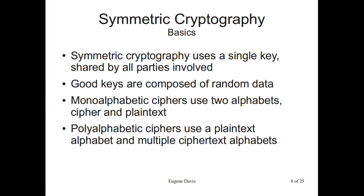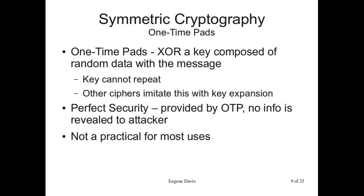Symmetric cryptography uses a single key. Every party that needs to decrypt or encrypt anything has to use that key. A good key is composed of random data — the more random it is, the better. Usually what you do is use a key expander, which basically takes random data and plugs it into a pseudorandom number generator. One-time pads are the only encryption algorithm which can provide perfect security, meaning you cannot break it and cannot gain any information about the content of the message just by looking at the encrypted message. Of course, it's entirely impractical for most uses — if I store a 5-gigabyte file, I have to have 5 gigabytes of key which I have to protect.